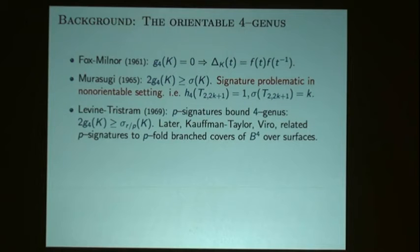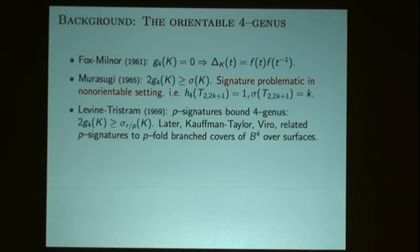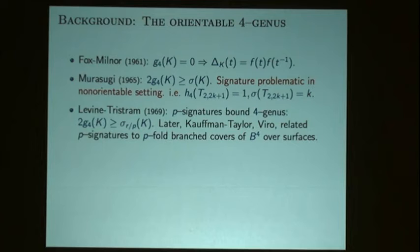Levine and Tristram introduced p-signatures of knots to study the four-genus. Kauffman and Taylor, and also Cappell-Shaneson, related these signatures and the general signature to four-manifold theory. So that introduced general four-manifold techniques into the study of the four-genus of knots.